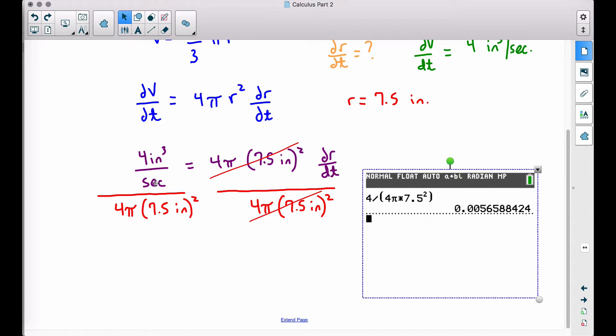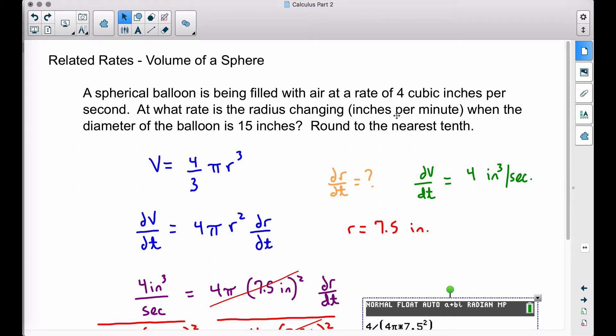We have cubic inches per second up top, and down here we got square inches. Well, cubic inches and square inches, they will cancel out, leaving you with just an inch up here, but it's going to be per second. We want per minute, so let's be very careful there.